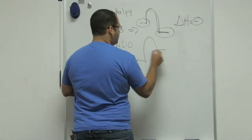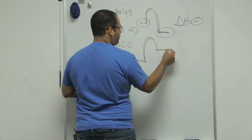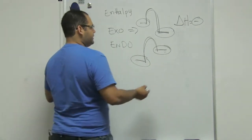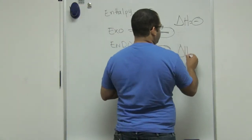In our endothermic reaction, however, we have more energy in our products than we have in our reactants. So our delta H is positive.